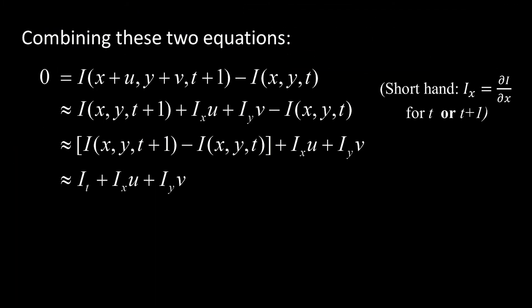I've now rearranged things. I just moved this part over to here. And then in the next line, what I did was, this is i sub t. i sub t is this difference there between i of x, y at t plus 1, minus i of x, y at t.